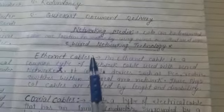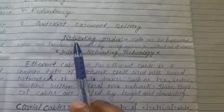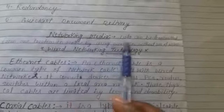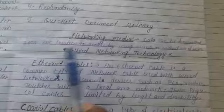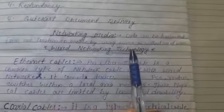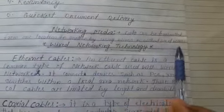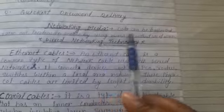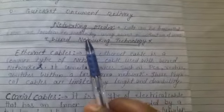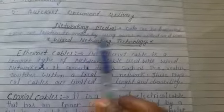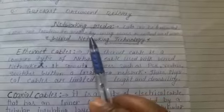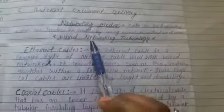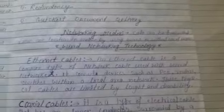Now we have to know about networking media. Data can be transmitted from one location to another by using wires or without the use of wire, that is wireless. With a wired connection, you can also send data from one device to another, or from one place to another.